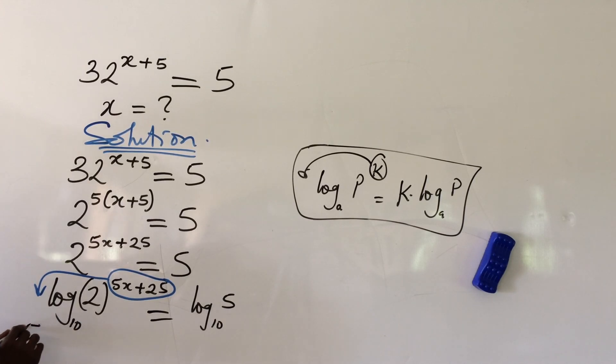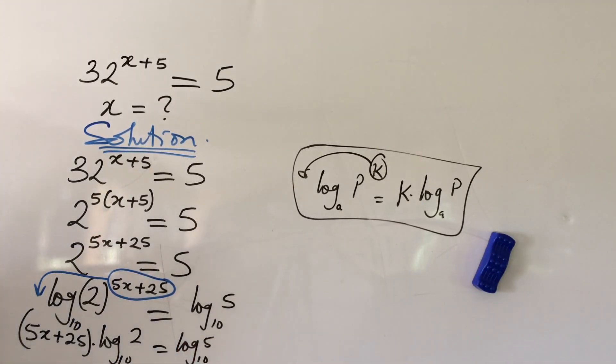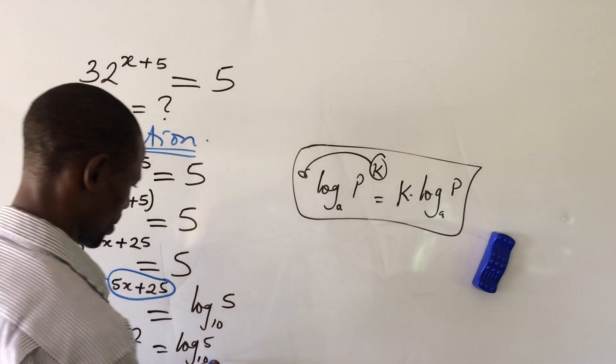In other words, look at the whole of this exponent here. So we have to move the whole of this exponent backward. And so if we do that, we're going to have this to be your 5x plus 25. Let's put this in bracket dot log 2 base 10 equal to log 5 base 10. Easy.